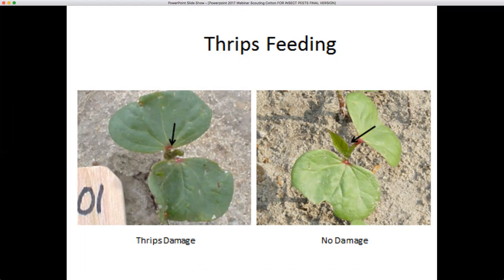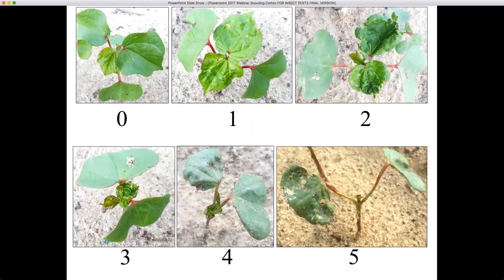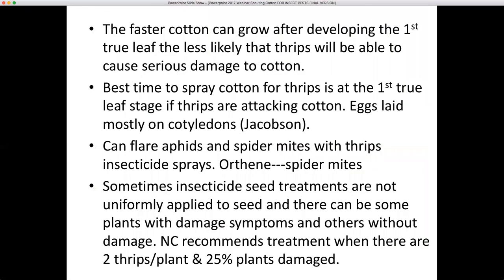The plant on the left would be rated a damage level of four, and the plant on the right a zero since we see no damage. Here's a damage rating scale of zero to five — particularly note number three, the level where one should give serious consideration to making a thrips foliar application. At number three you see two true leaves with a lot of disfigurement and thrips present. Number five is what you may run into if you don't treat and thrips continue moving into the field — the plant will sometimes die. The faster cotton can grow off after developing the first true leaf, the less likely it is to have serious damage by thrips.